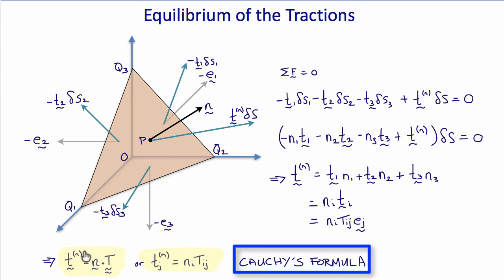And Cauchy's formula states that the traction vector T is equal to n times the stress tensor T, or in component notation, the jth component of the traction equals the i-th component of the unit normal times T i j, which shows that the stress tensor T i j, its first index is the index referring to the surface, and its second index is the index referring to the component of the traction. So we've learned before that the stress tensor resolves the components of the traction with respect to the surfaces, and we can now see that in this compact form.